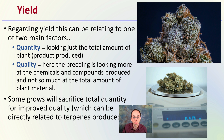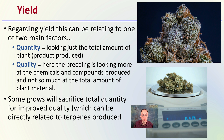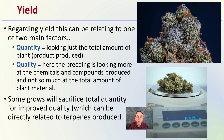Then we get into general yield — how much is the plant producing? Regarding yields, this can relate to one of two main factors: quantity, meaning the total amount of plant product, or quality, where breeders focus more on the chemicals and compounds produced rather than total plant material. Most growers would like both high quantity and high quality, but sometimes you may have to select one over the other. Some growers will sacrifice total quantity for improved quality, which can be directly related to the terpenes produced.